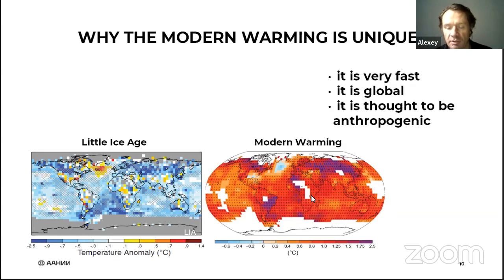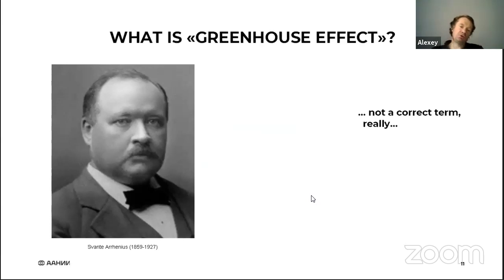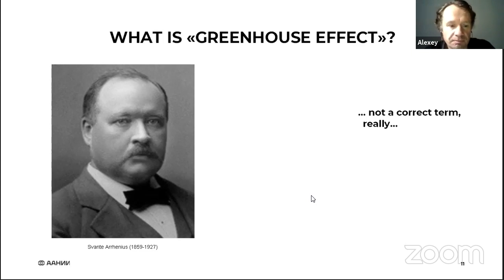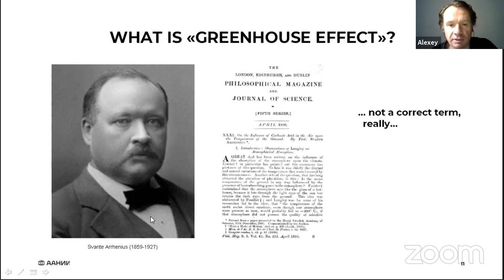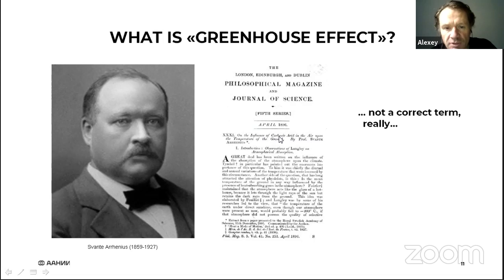When we talk about anthropogenic influence on climate, we first think of the greenhouse effect. The idea that the atmosphere somehow warms our planet comes from many centuries ago and was already well understood in the 18th century. The scientist who first described this process physically and comprehensively was Svante Arrhenius, a Swedish scientist, who in 1896 wrote a paper on the influence of carbonic acid in the air upon the temperature of the ground.